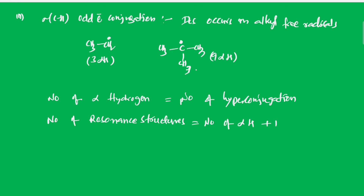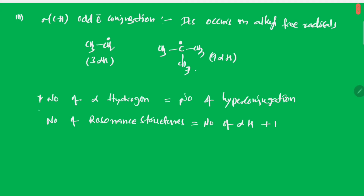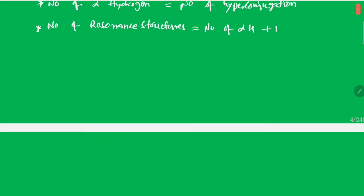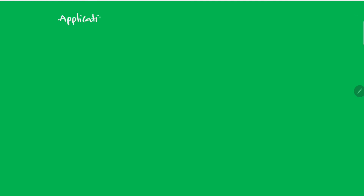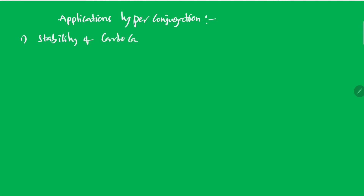Let's see the applications of hyperconjugation. The first application is stability of carbocation. The stability of carbocation is explained by mesomeric effect, inductive effect, and hyperconjugation effect. More hyperconjugation structures means more stability.